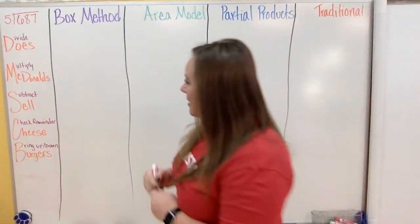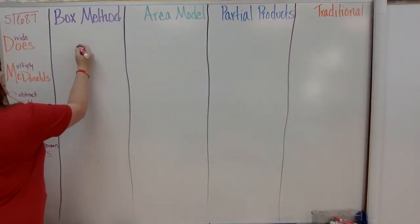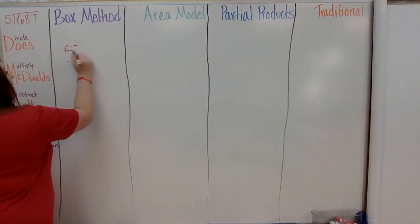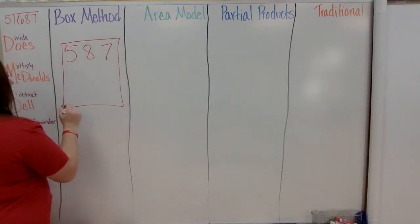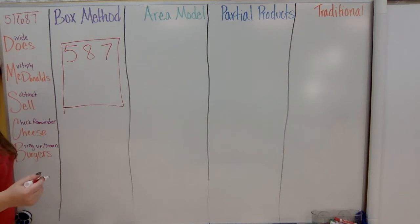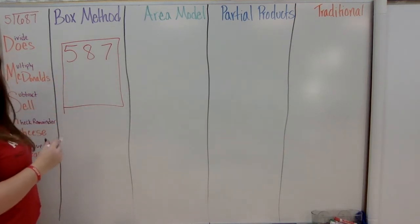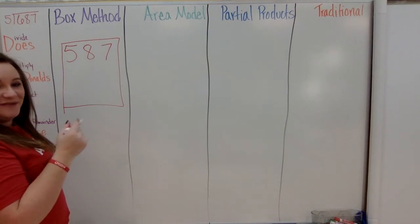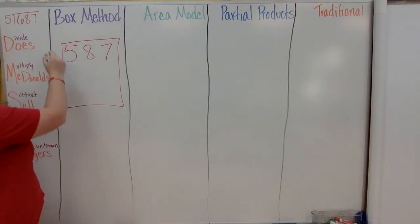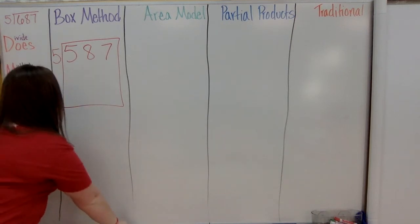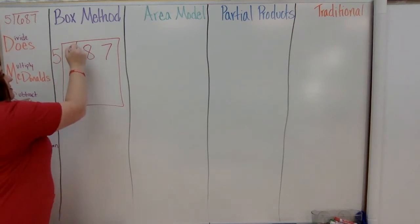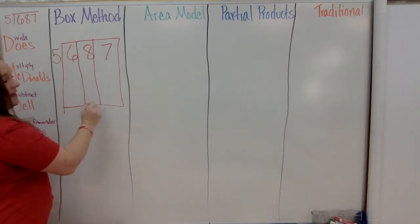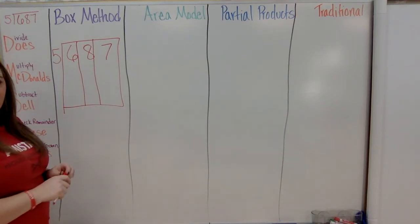For the box method, you take 687 and put it in a box. You'll still have your divisor out here on the side, and the numbers on the inside. Draw lines between each number to help you divide.